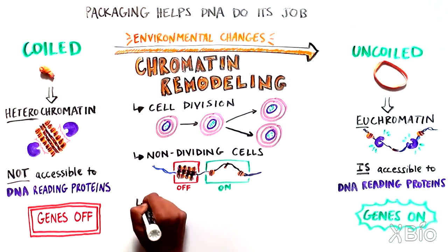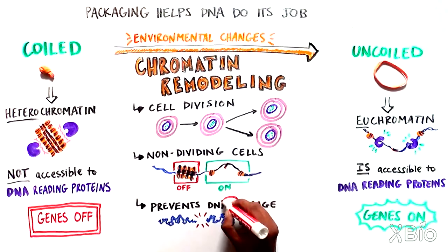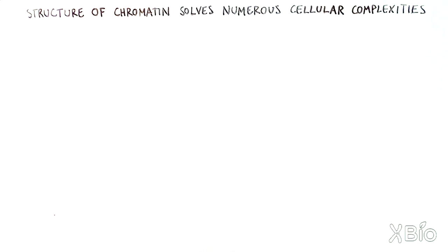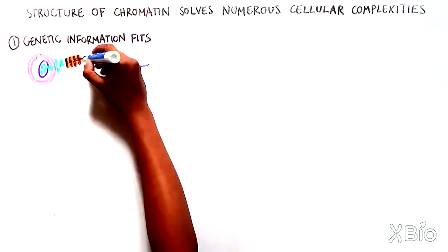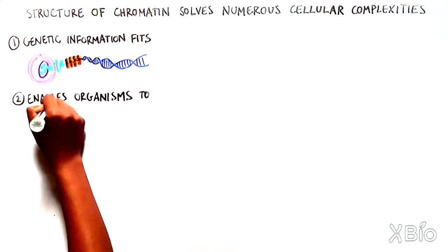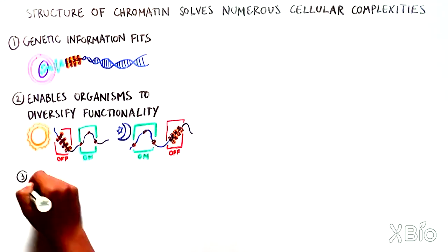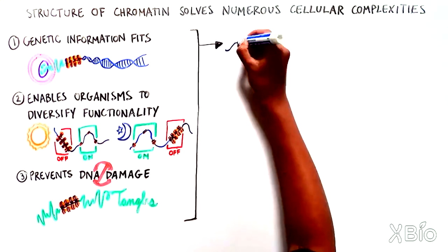Beyond ensuring the right DNA is accessible at the right time, this packing structure also prevents DNA from getting tangled, which reduces DNA damage. The structure of chromatin is one of biology's many ingenious solutions to a mathematical challenge, and simultaneously solves numerous cellular complexities. Number one, it ensures vast amounts of genetic information can fit into each cell. Number two, it enables complex organisms to diversify their functionality. And number three, it helps prevent DNA damage.